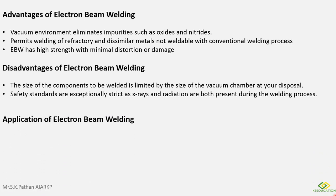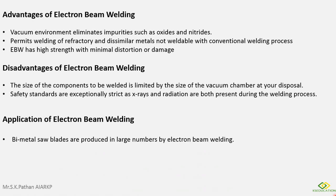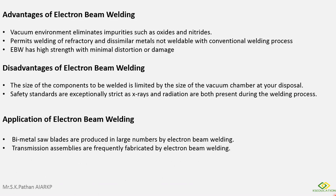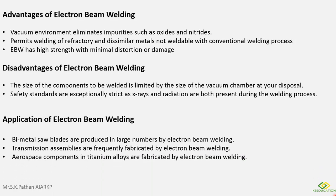Applications of electron beam welding: Bi-metal saw blades are produced in large numbers using electron beam welding. Transmission assemblies are frequently fabricated by electron beam welding. It is also used to join titanium and its alloys, which is a significant application of EBW.